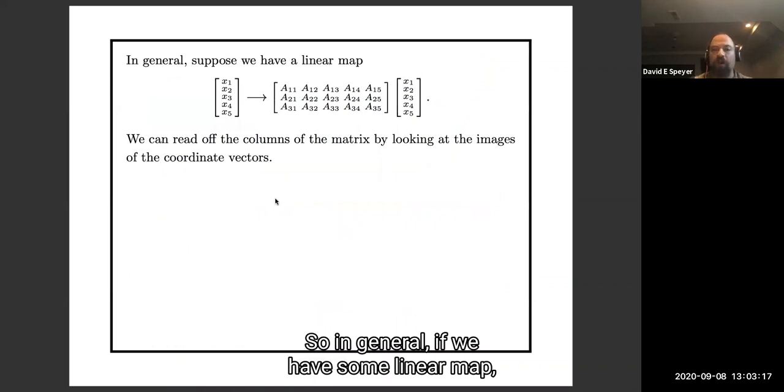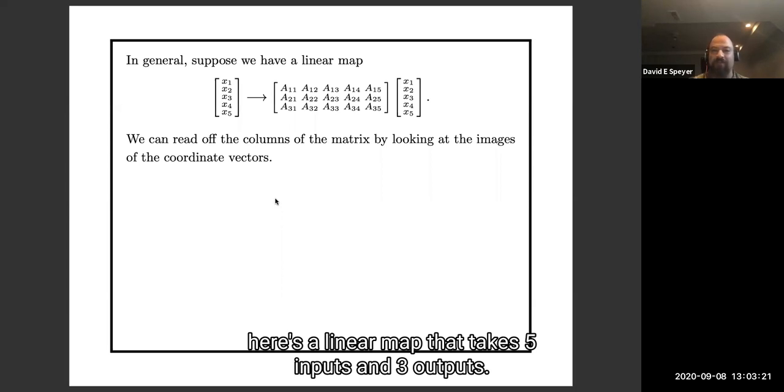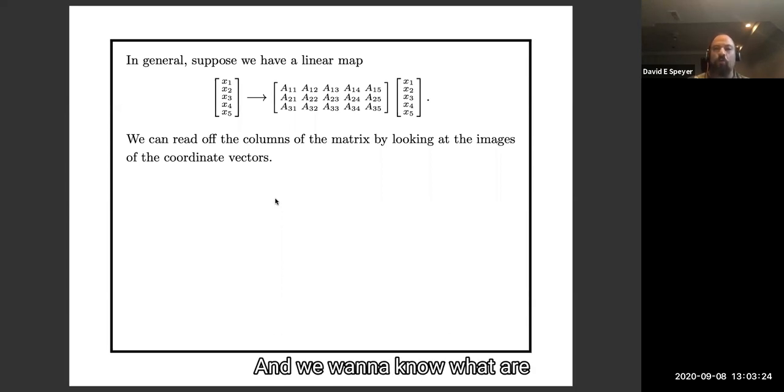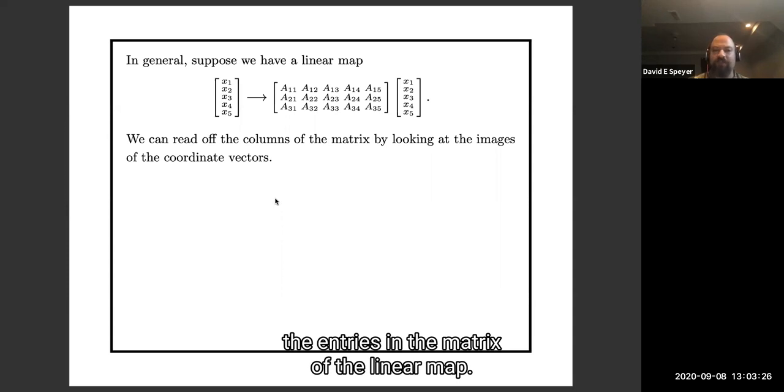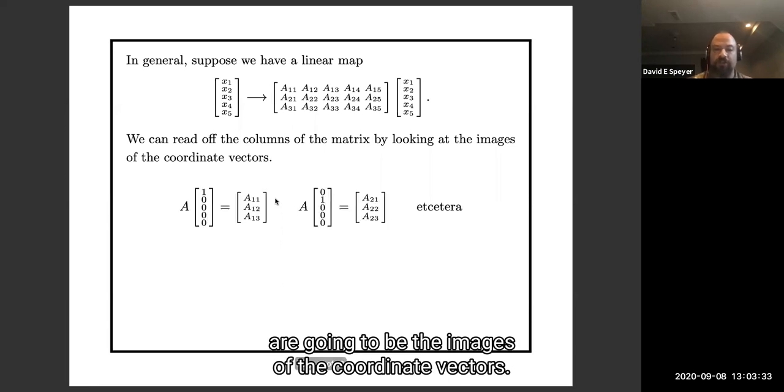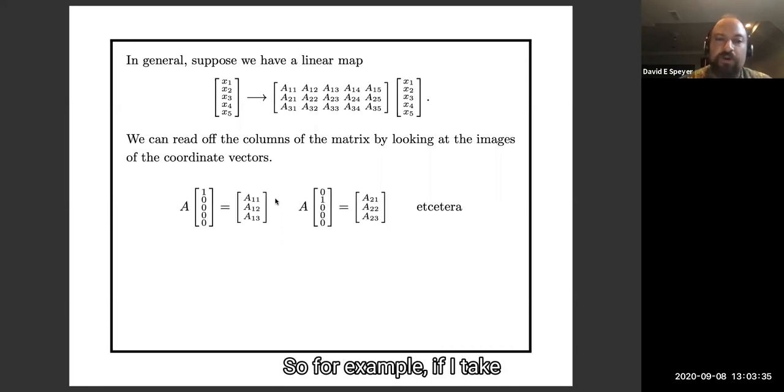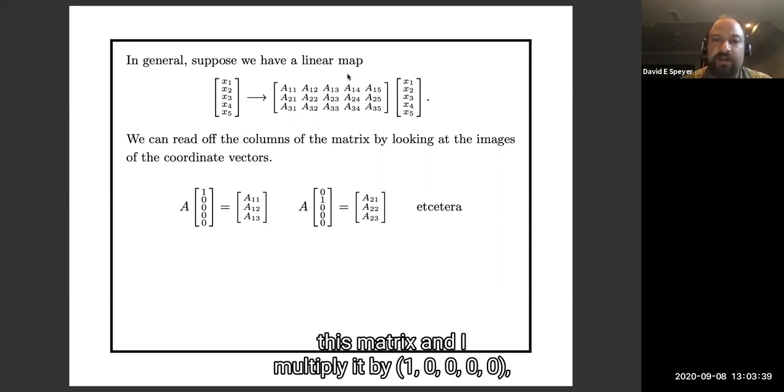In general, if we have some linear map, here's a linear map that takes 5 inputs and 3 outputs, and we want to know what are the entries in the matrix of the linear map, the columns of this matrix are going to be the images of the coordinate vectors. For example, if I take this matrix and multiply it by 1, 0, 0, 0, 0...